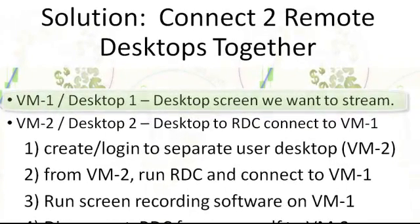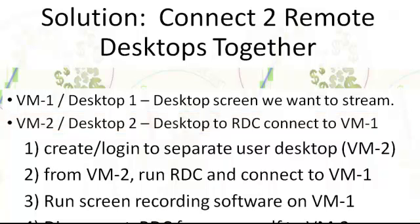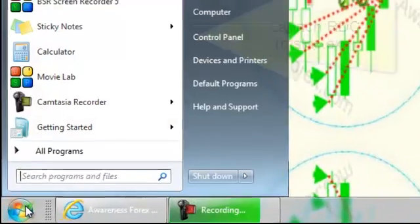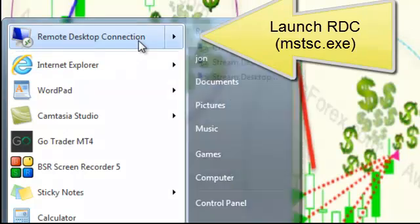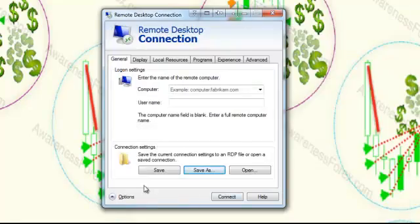Desktop one, or VM one, will be the desktop screen we want to stream. Virtual machine number two, or VM two, will be the desktop that we will use to connect to VM one. This is usually our laptop or desktop at home or at work. For this tutorial example we will be creating a separate user on the same server as VM two. You open up remote desktop connection and enter in your server details and connect to your remote desktop number two.